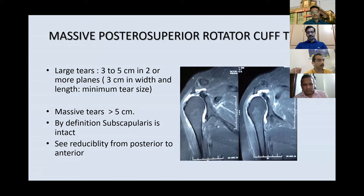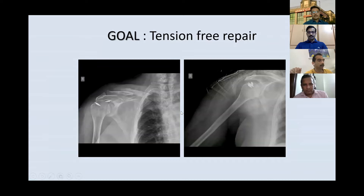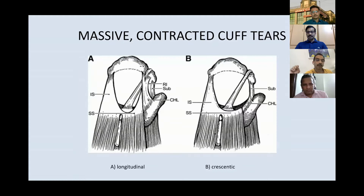In this subset, tension-free repair is very important, because if you repair them under tension you can have anchor pullout or failures due to high tension. The goal should be to perform the repair under low tension.